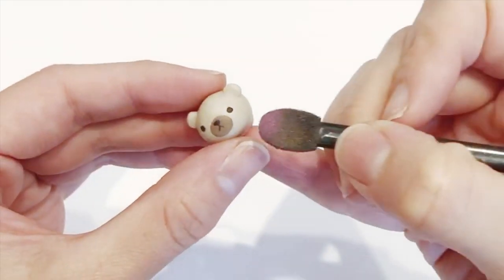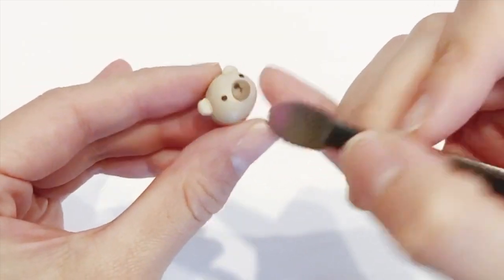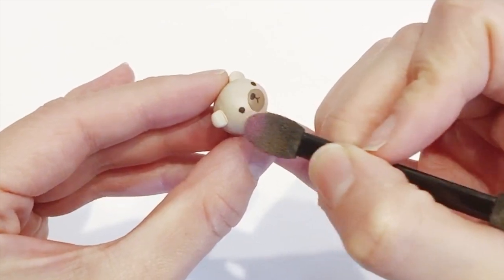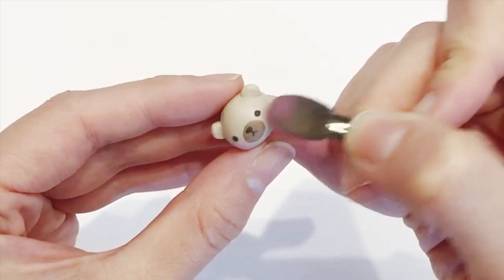Once you're happy with how everything looks, I'm going to add some blush to the bear's cheeks. I'm taking some actual pink eyeshadow and gently touching it underneath the eyes where the cheeks of the bear belong.